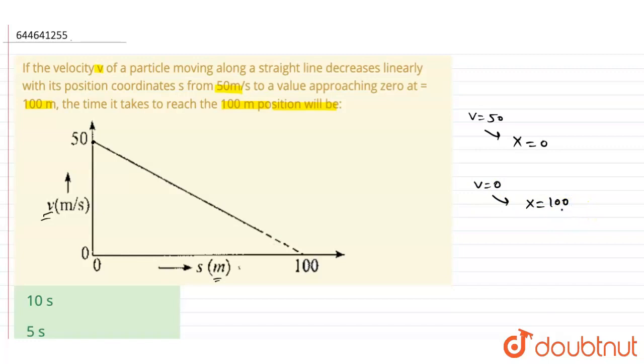Now here we can find the slope of this graph, which is m. So slope can be found by dv by dx. Here dv is basically 50 and it is 100, and the slope is negative. You can see this here.